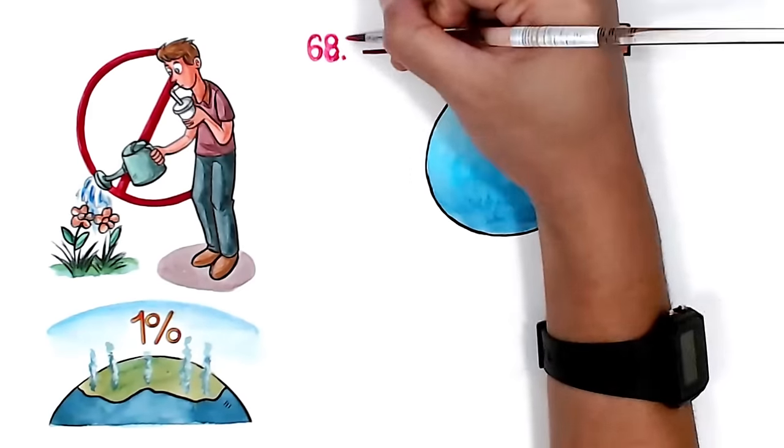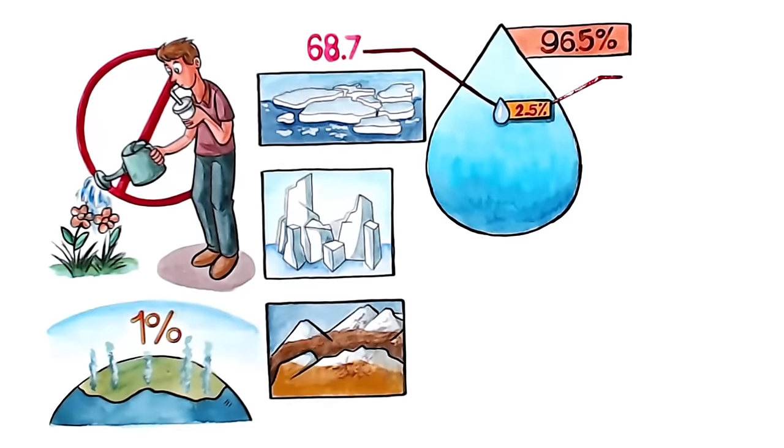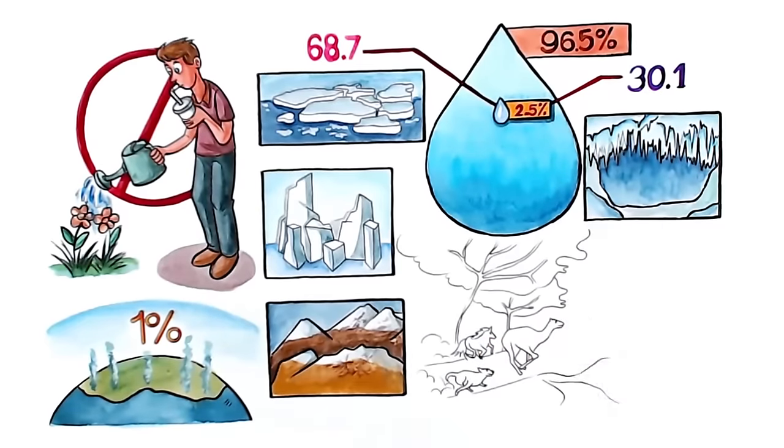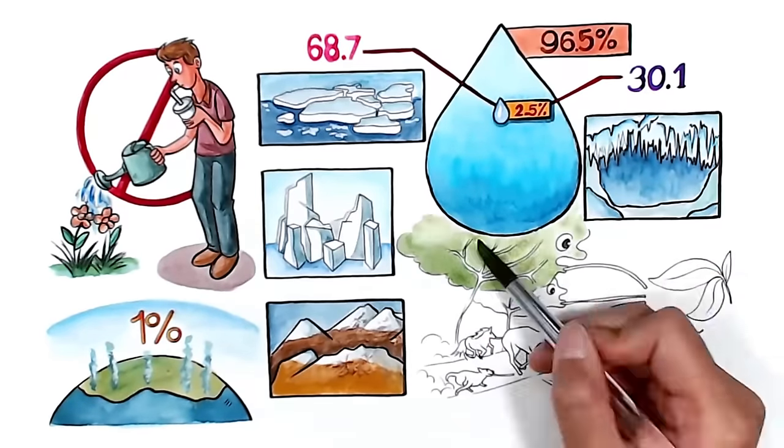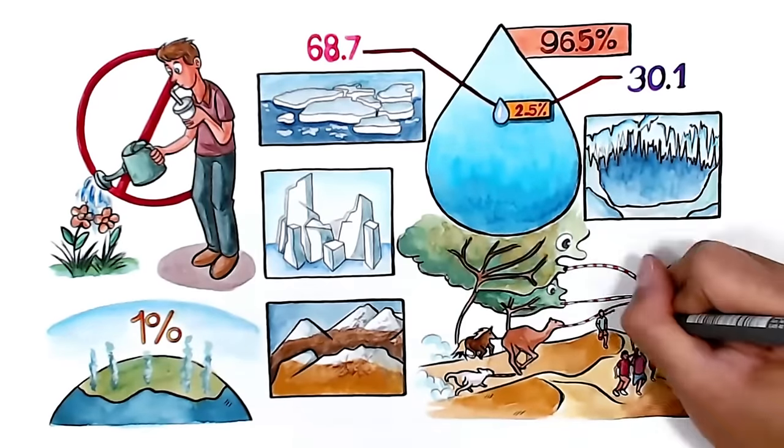Out of that small amount of fresh water, most of it is found in ice caps, glaciers, and permanent snow, and almost all the rest is found in the ground. Yep, only about 1% of the world's fresh water is easily available to the creatures, plants, and 7 billion humans that live on land. That's it.